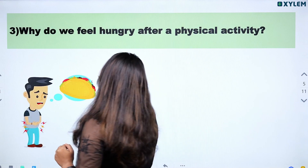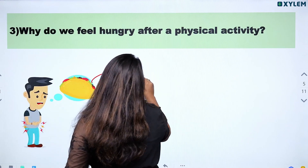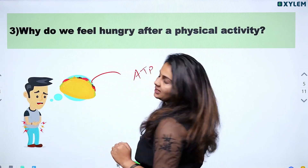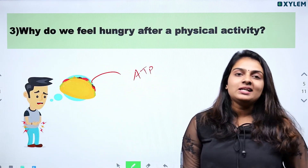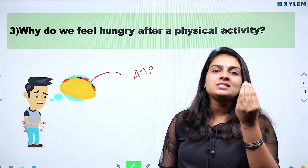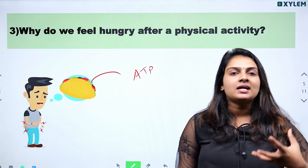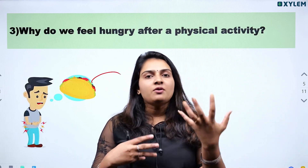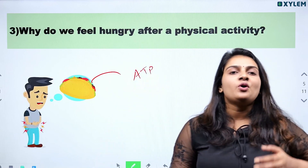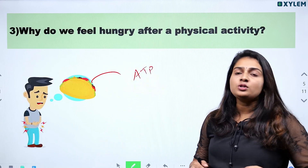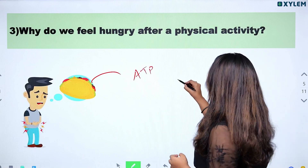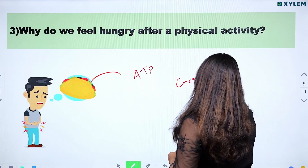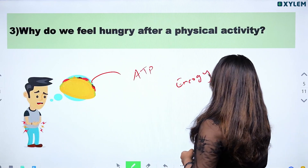We want to make some energy currency. ATP — Adenosine Triphosphate. We want to work out, and this requires a lot of energy. The energy will be utilized for life in our body.